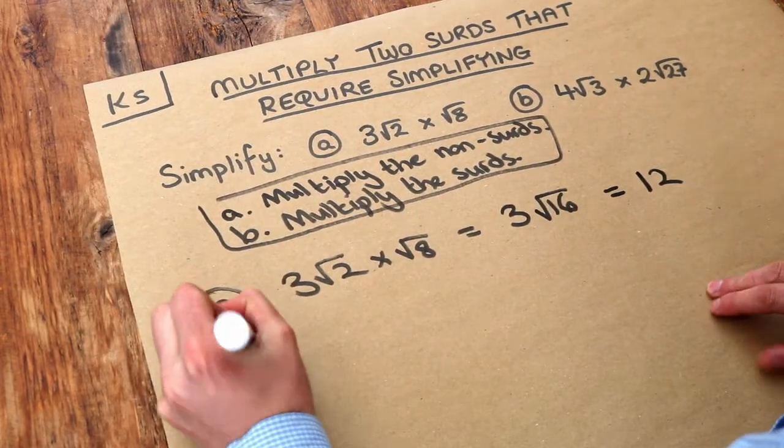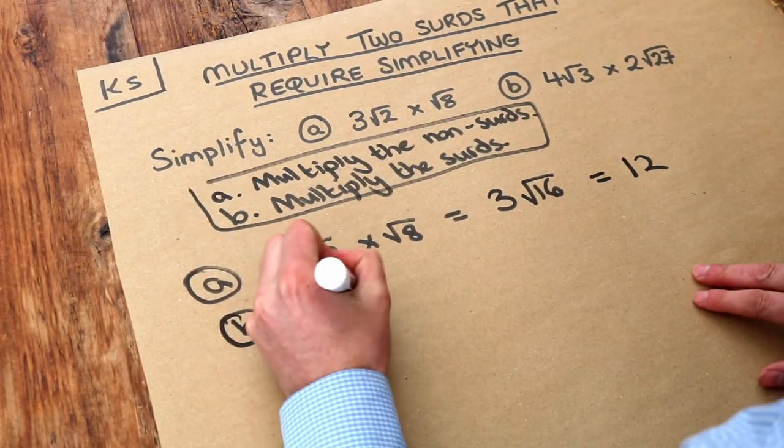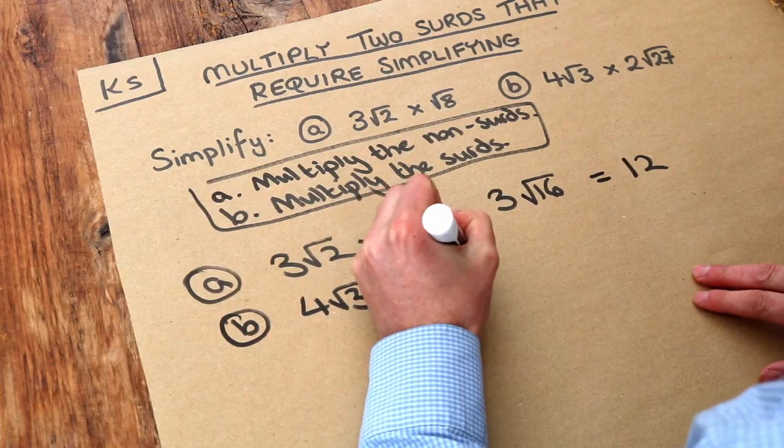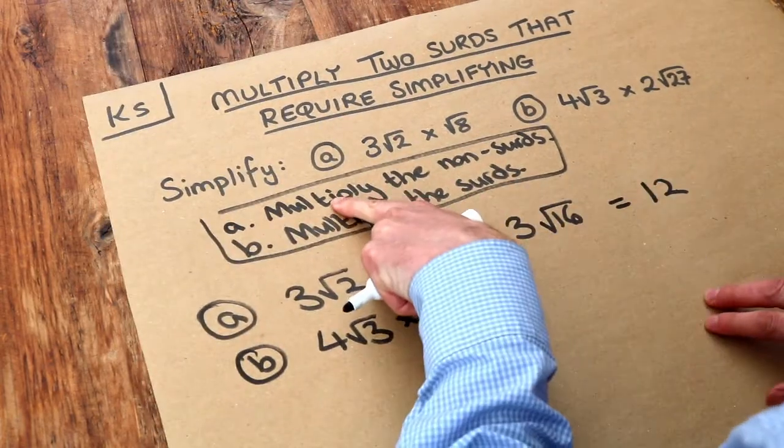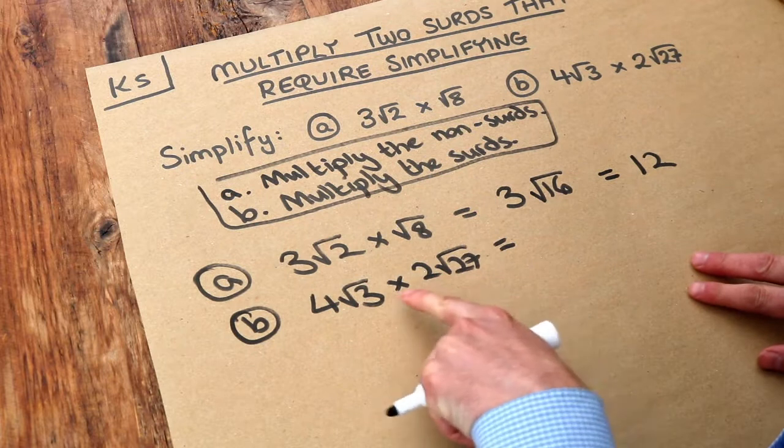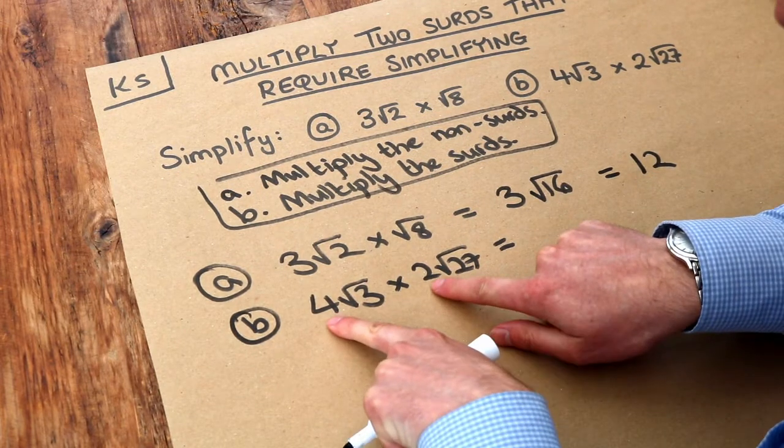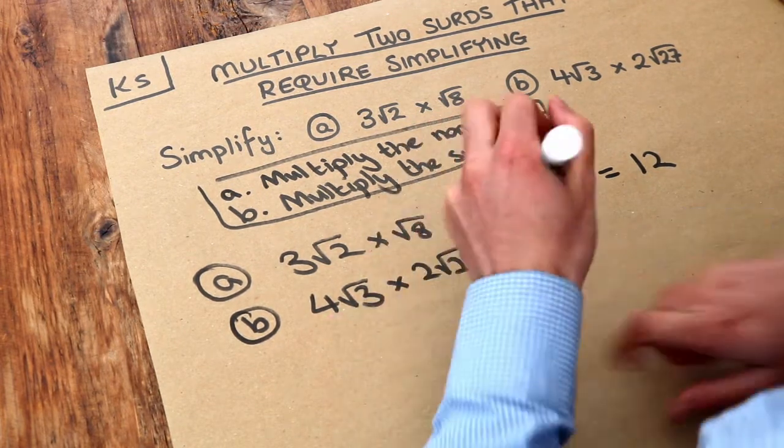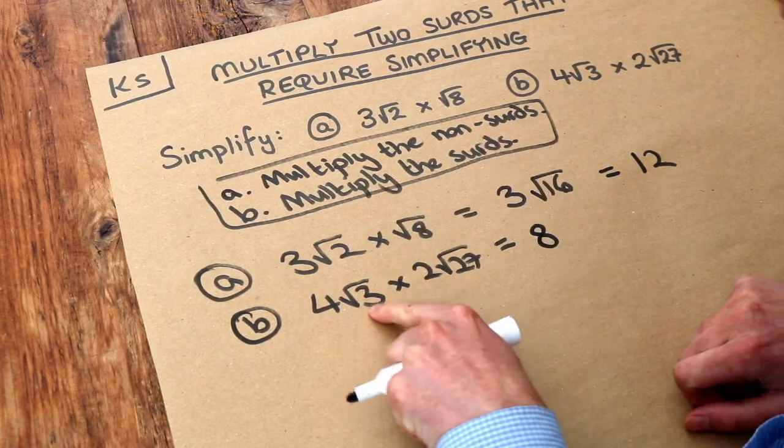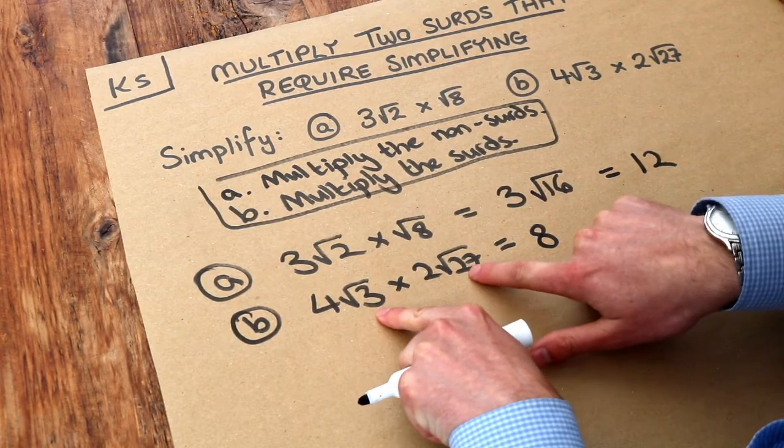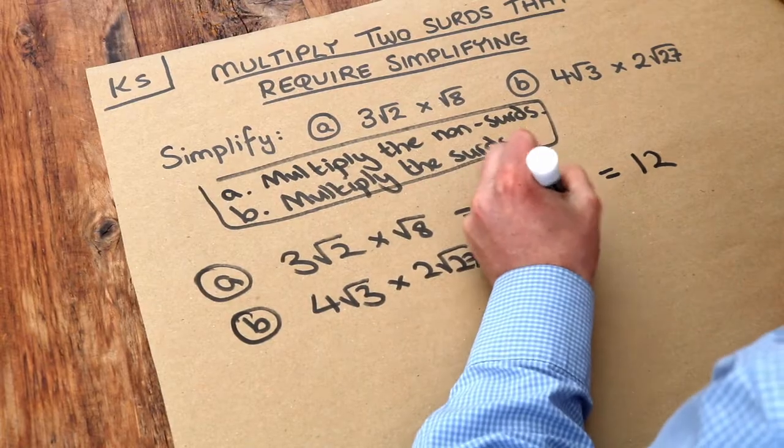What about b? We've got four root three times two root twenty-seven. There's a bit more to multiply here, so let's firstly multiply the non-surds. So that's the four and the two, they don't have square roots over them. Four times two is eight. Then we've got the root three times the root twenty-seven. Three times twenty-seven is eighty-one, so it's root eighty-one.